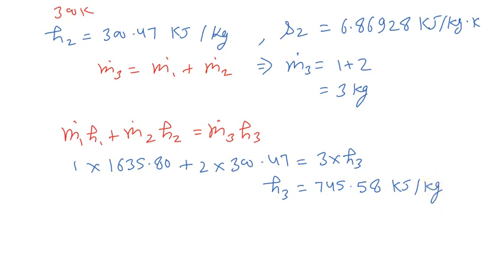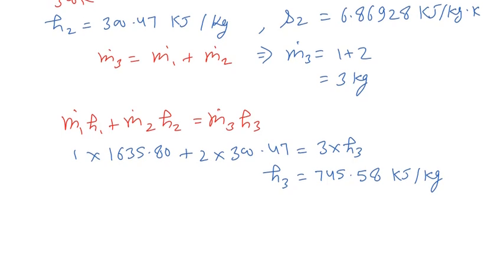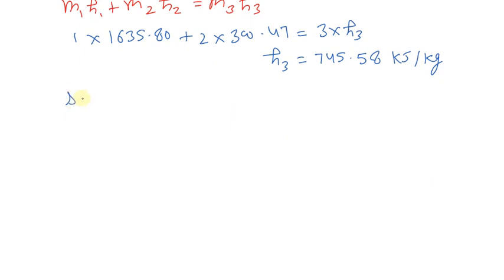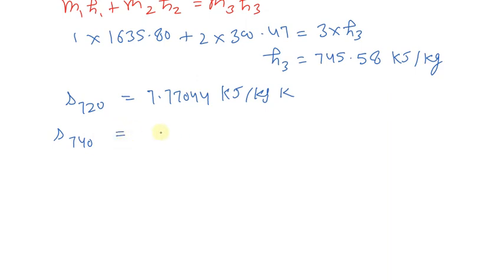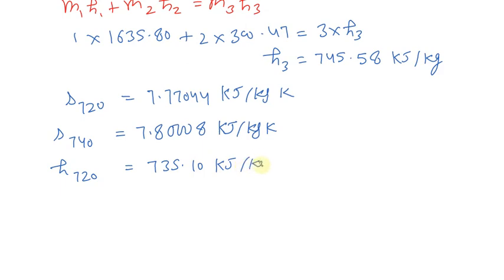This is the value of enthalpy after mixing of air. From the property table of air, entropy S corresponding to 720 K is 7.77044 kJ per kg Kelvin, entropy S corresponding to 740 K is 7.8008 kJ per kg Kelvin, and enthalpy H corresponding to 720 K is 735.10 kJ per kg.